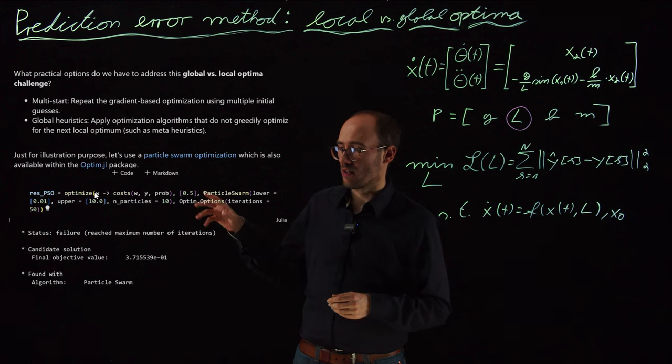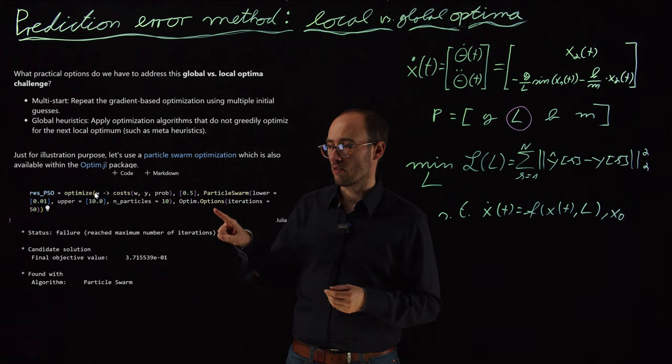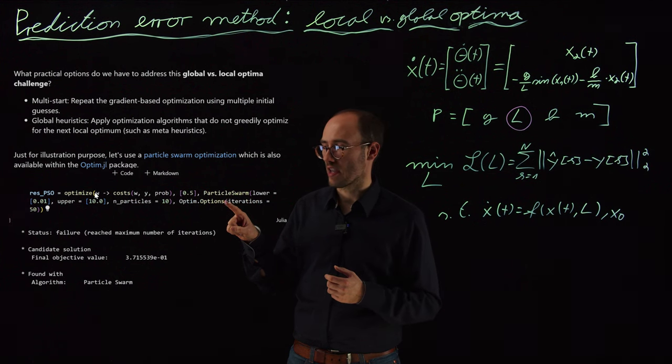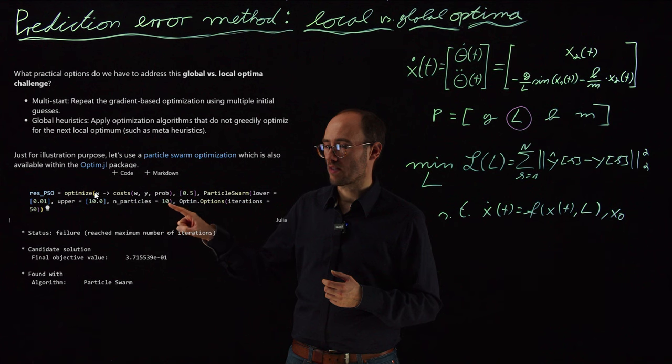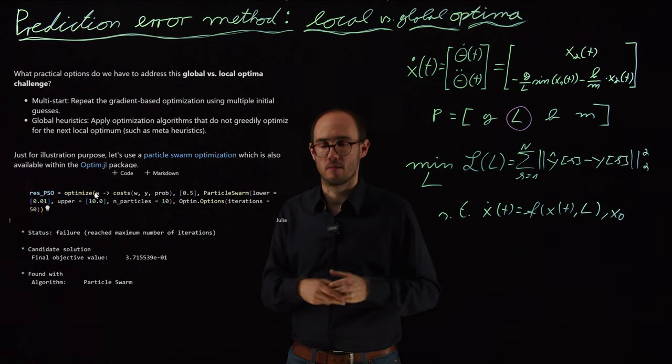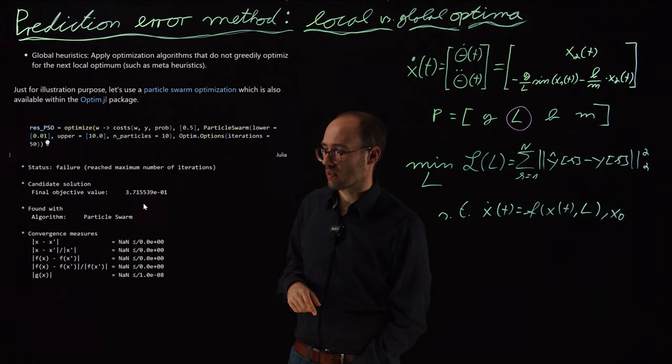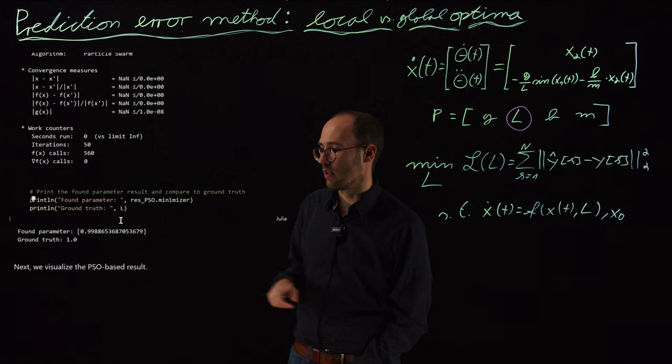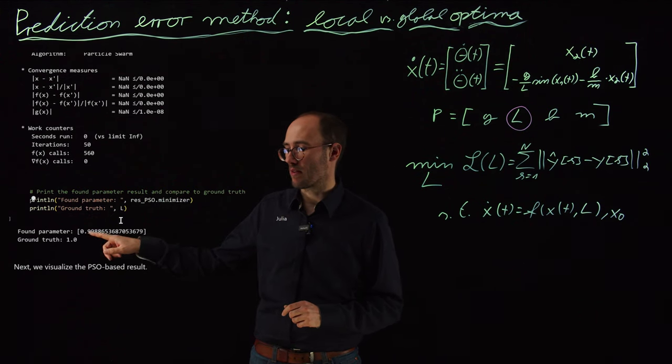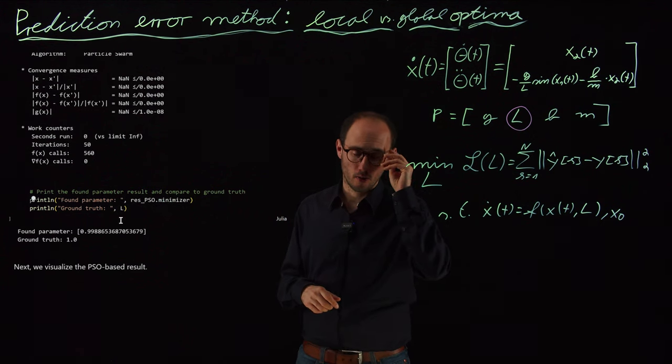What we do is we recall the same cost function. The only thing which we do now is we define as a new solver, not the Newton solver, but the particle swarm optimization, which will basically shoot out 10 particles randomly into the cost space, into the parameter space and then iterate via some heuristics trying to find the global minimum. And indeed, that was successful in this example because after a couple of iterations of the particle swarm optimization, we have been able to find the global optimum because it is less sensitive to local minima.